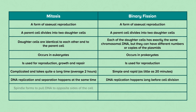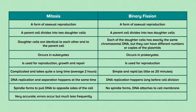In mitosis, the spindle forms to pull DNA to opposite sides of the cell, whereas with binary fission, no spindle forms and DNA attaches to the cell membrane. Finally, in mitosis, it's very accurate — errors occur, but they're very infrequent. On the other hand, binary fission is less accurate and errors occur more frequently.